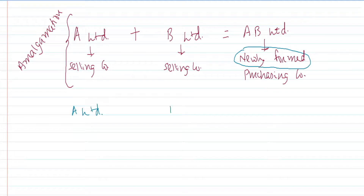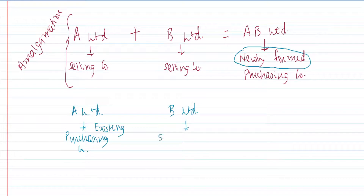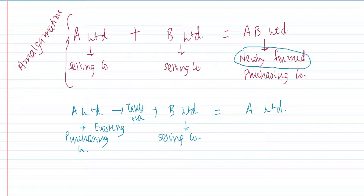Now, what is absorption? Again there are two companies, A Limited and B Limited, but here A Limited is the purchasing company — and importantly, it is an existing purchasing company. B Limited is the selling company. A Limited takes over B Limited, and finally you are left with only A Limited. The selling company loses its identity and will now be known simply by the name of the purchasing company. A Limited is the resultant company. This is what is known as absorption.